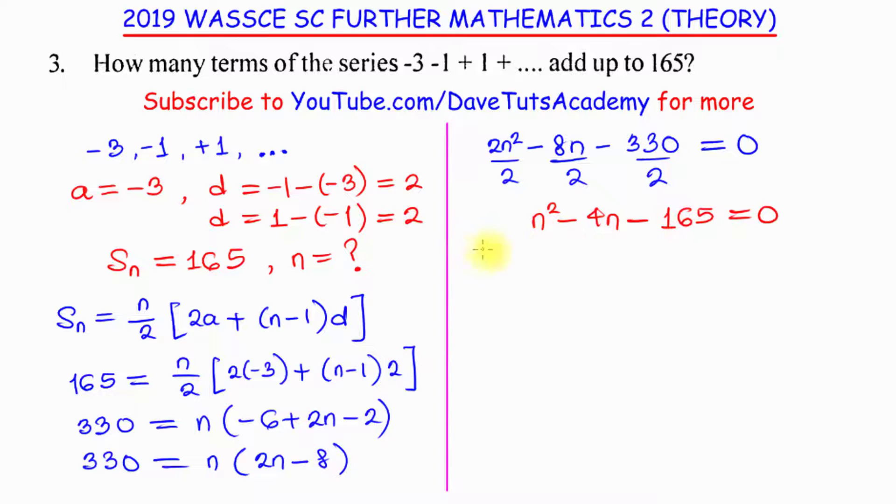So, this is a quadratic equation that we can solve with whatever method we find appealing to us. I want to look at 165n square and I want to look at minus 4n. So, to solve this, I need to look for 2 terms that I can multiply to give minus 165n square. And when I add them together, I will get minus 4n.